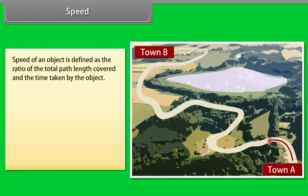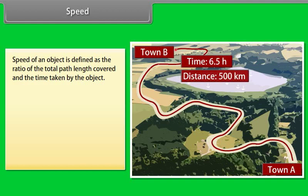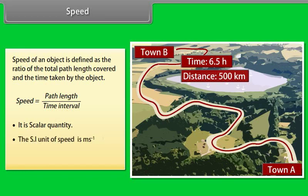Speed: the speed of an object is defined as the ratio of the total path length covered to the time taken by the object. Therefore, speed equals path length divided by time interval. It is a scalar quantity. Its SI unit is m/s (meters per second, or m·s⁻¹). Its dimensional formula is M⁰L¹T⁻¹.